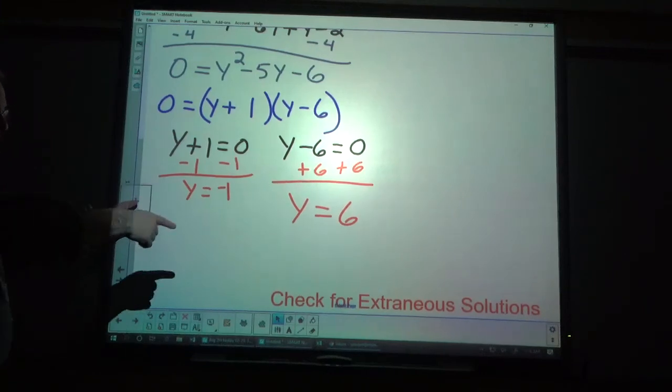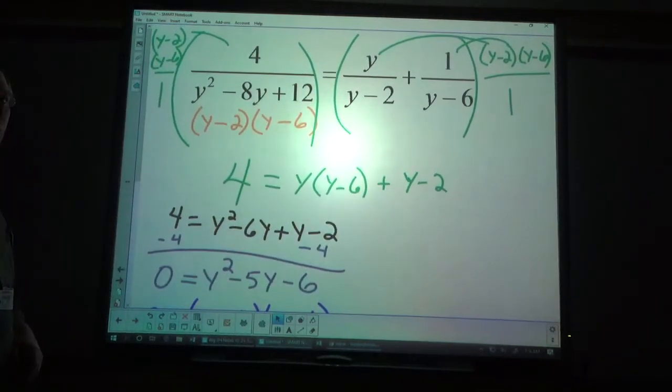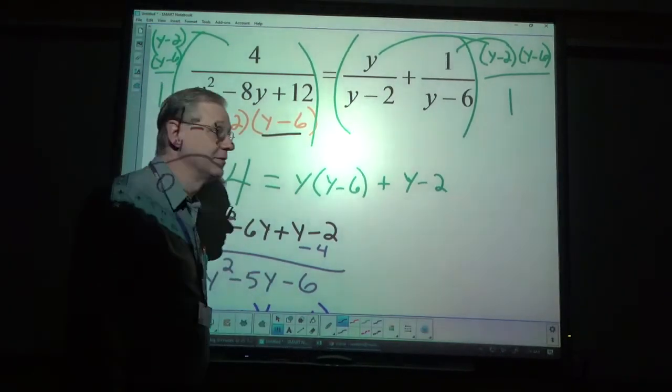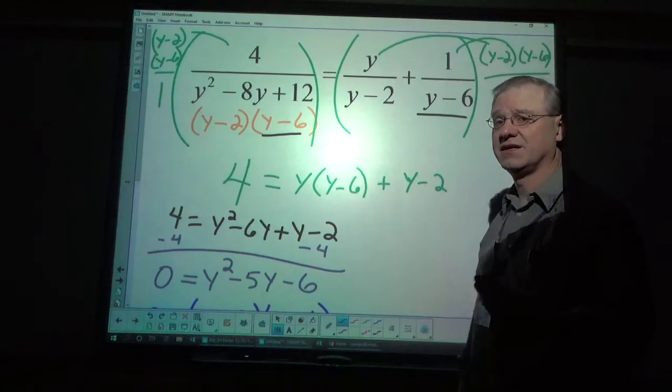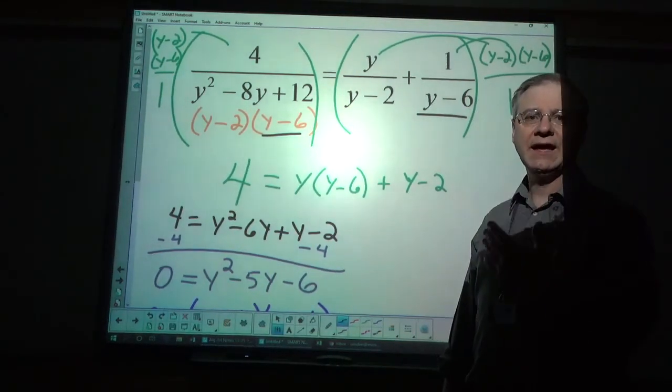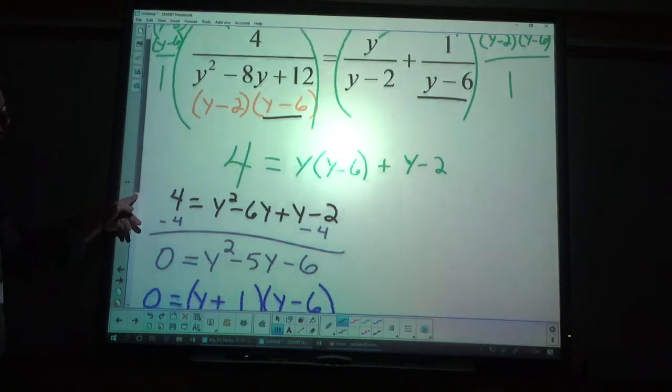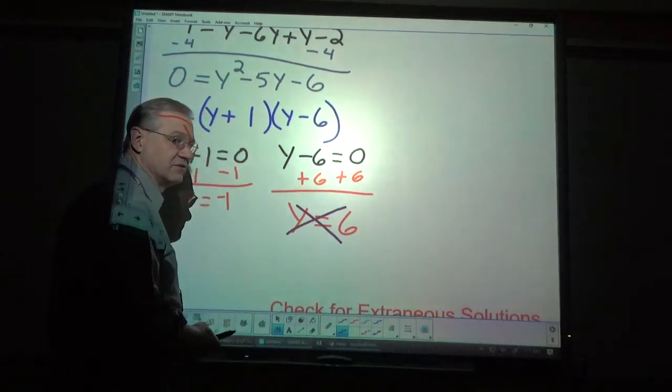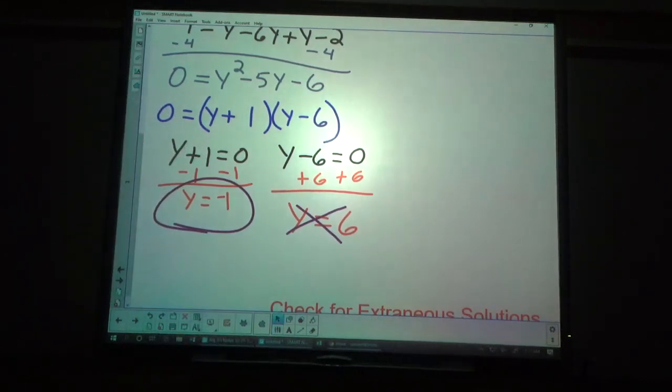Let's go back and do this check for extraneous solutions. If I put 1 in the denominator, no problem. No 0s. If I put 6 in the denominator, if I put 6 here, that's going to be a problem. If I put 6 here for y, that's going to be a problem. So, 6 is an extraneous solution. It is an extra answer coming about because of the method that we used to solve for the problem. So, this is what we would call an extraneous solution. So, we just cross it off and circle the one that is the only solution or solutions left.